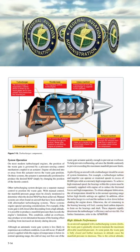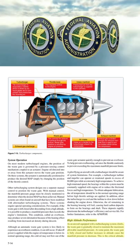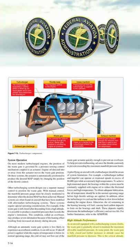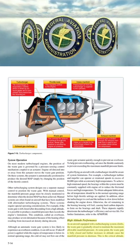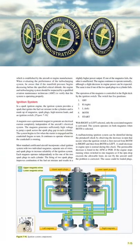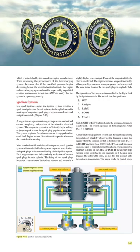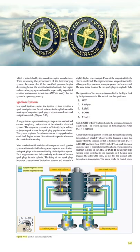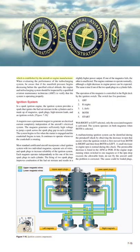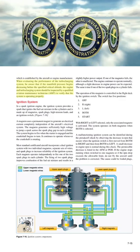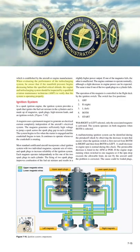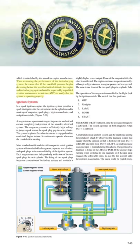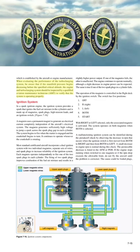As an aircraft equipped with a turbocharging system climbs, the wastegate is gradually closed to maintain maximum allowable manifold pressure. At some point, the wastegate is fully closed and further increases in altitude cause the manifold pressure to decrease — this is the critical altitude, established by the aircraft or engine manufacturer. When evaluating the performance of the turbocharging system, be aware that if the manifold pressure begins decreasing before the specified critical altitude, the engine and turbocharging system should be inspected by a qualified aviation maintenance technician to verify proper operation.